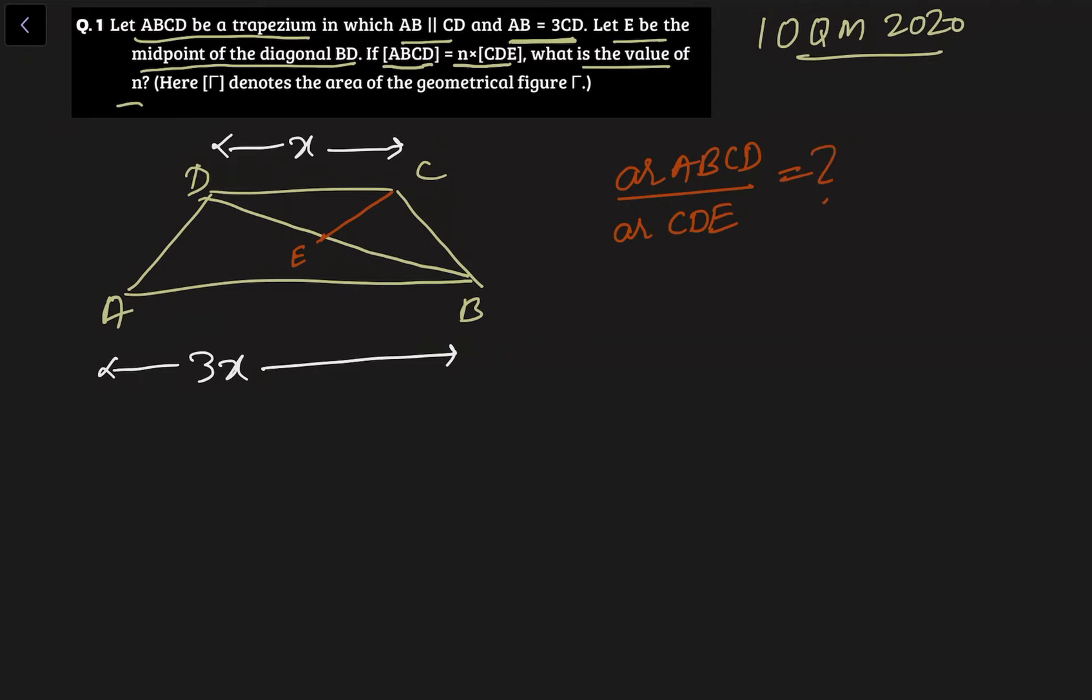Now from our side let's assume this area to be A. If this area is A, since E is the midpoint these two sides are equal, I can say that CE is the median. Now if CE is the median, we know that the median divides the triangle into two equal areas. So this area will also be A.